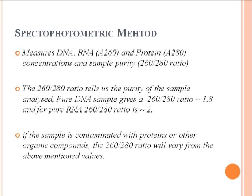The 260/280 ratio tells us the purity of the sample to be analyzed. For example, a pure DNA sample will give a 260/280 ratio around 1.8, and for pure RNA the 260/280 ratio will be around 2. If the sample is contaminated with proteins or other organic compounds, the 260/280 ratio will vary from the above mentioned values.